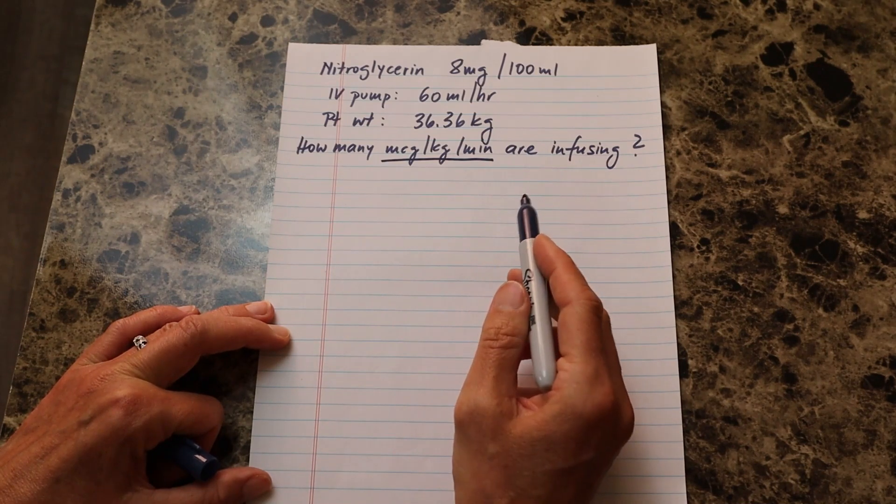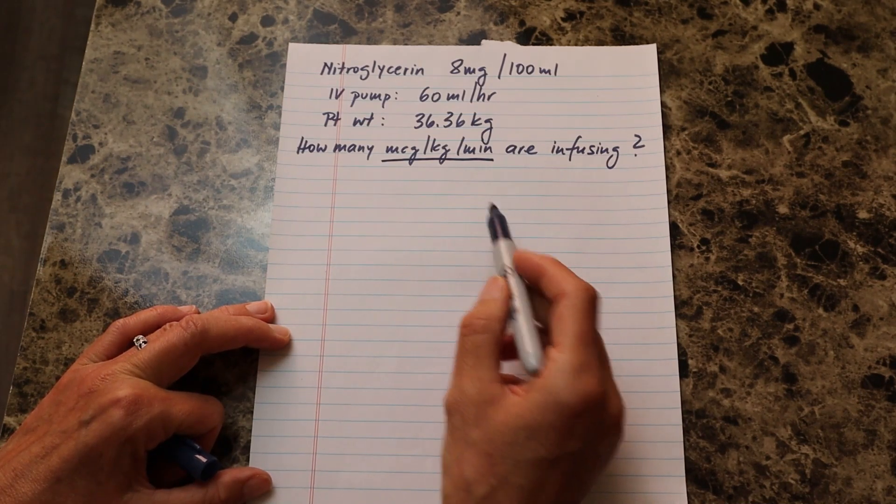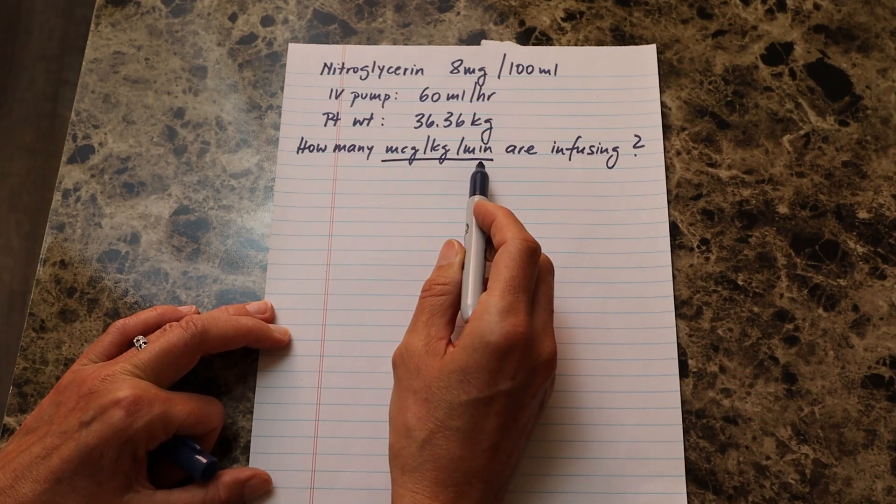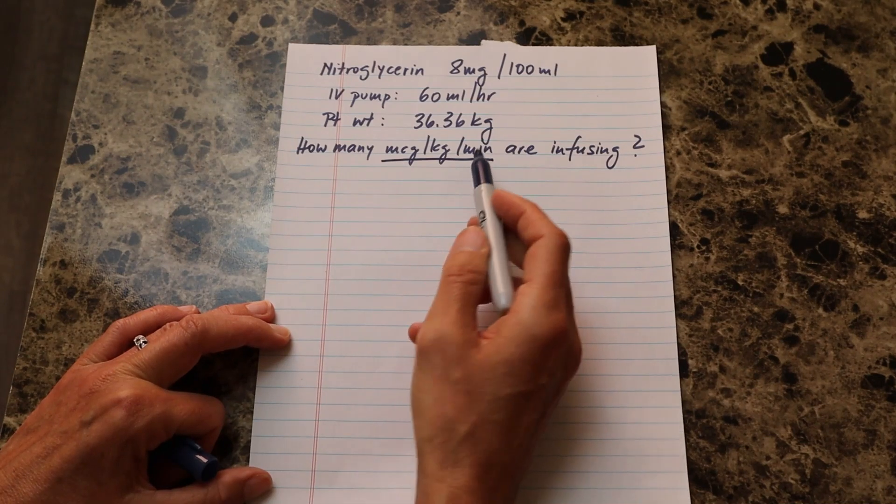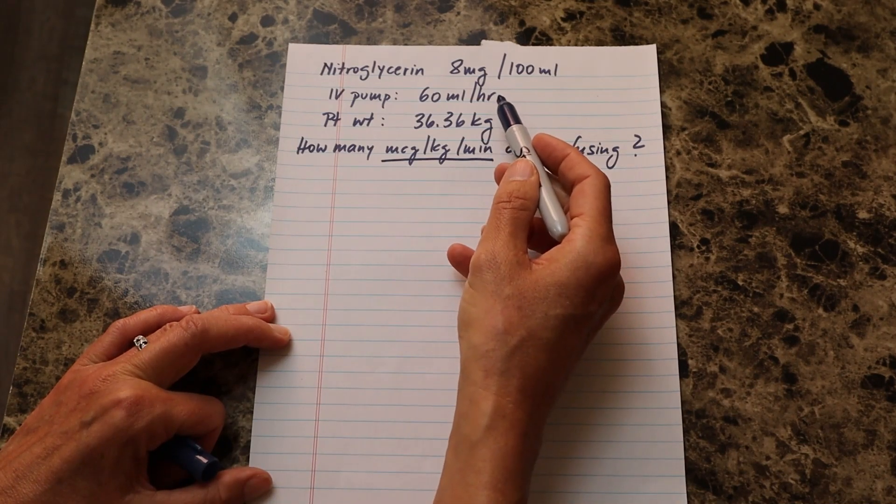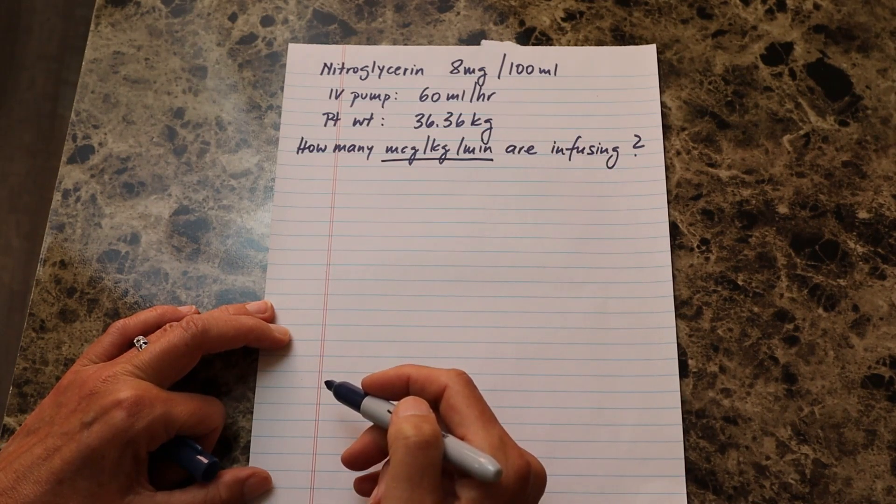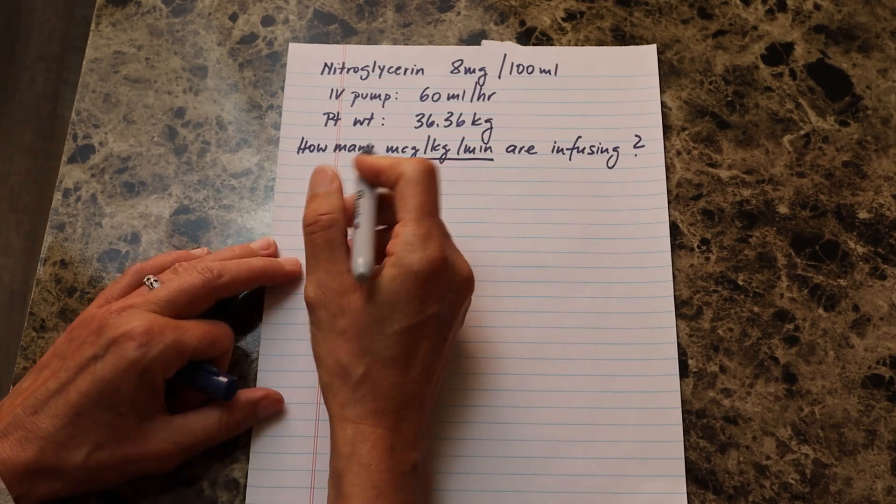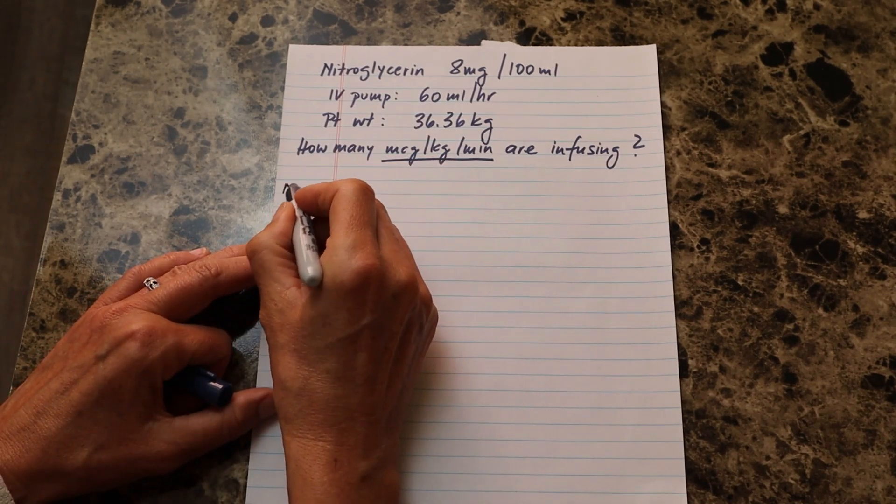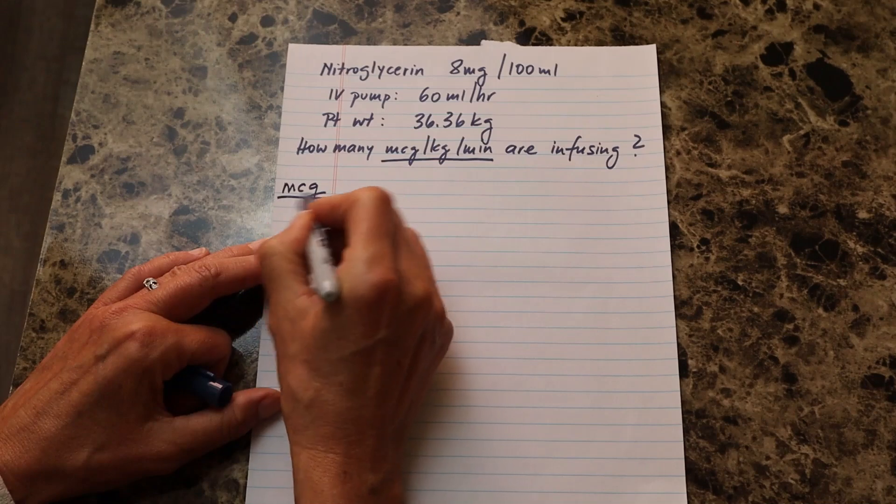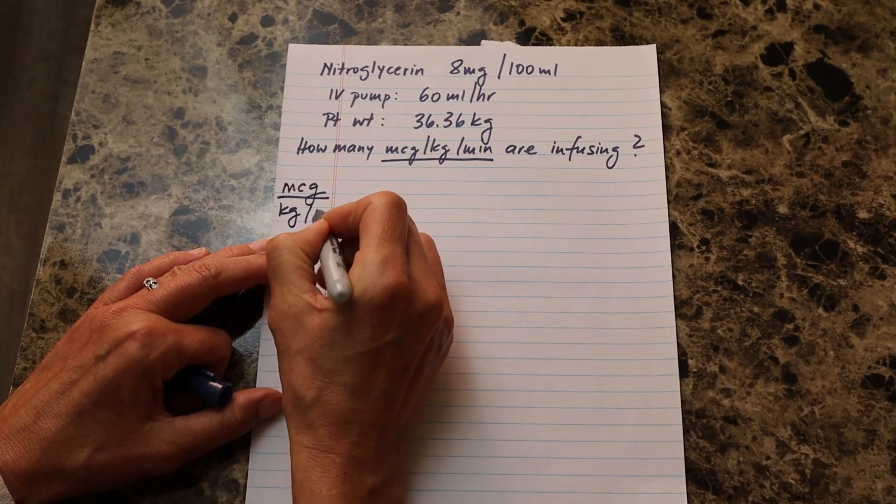Now this is a little bit of a turned around problem. Many times you have the micrograms per kilo per minute and need to figure out the milliliters per hour. This is just turned around, but either way, using dimensional analysis, we always start out with what we're looking for. So in this case, we're looking for micrograms per kilo per minute.